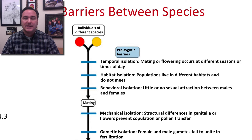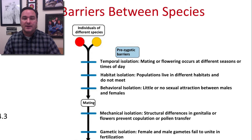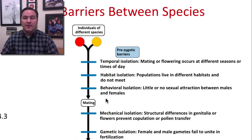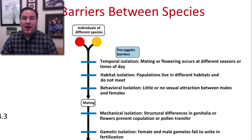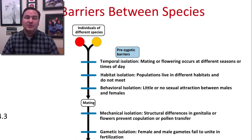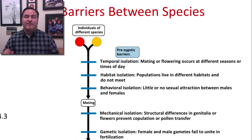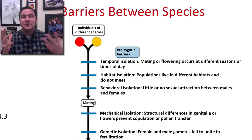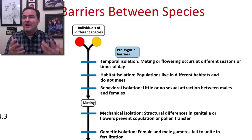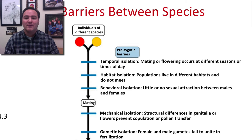Habitat isolation is another prezygotic barrier, and we talked about that with the flowers living in different areas on the island. Behavioral isolation is yet another — there can be little or no sexual attraction between males and females. For example, if a frog gives a call and the female doesn't like that call, the female is never going to give access to the male, and no mating will occur.